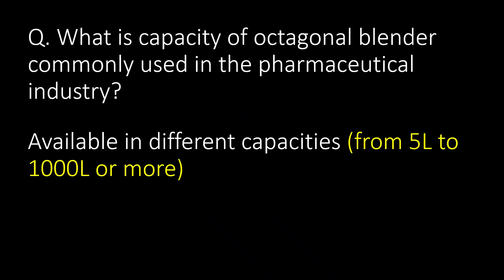What is the capacity of an octagonal blender commonly used in the pharmaceutical industry? The commonly used octagonal blender capacities vary based on the application, ranging from 5 litres to 1000 litres or more.